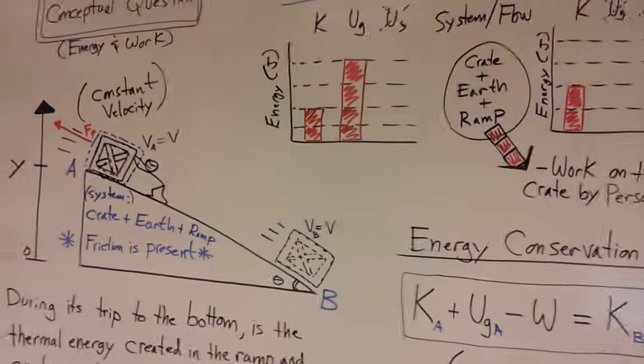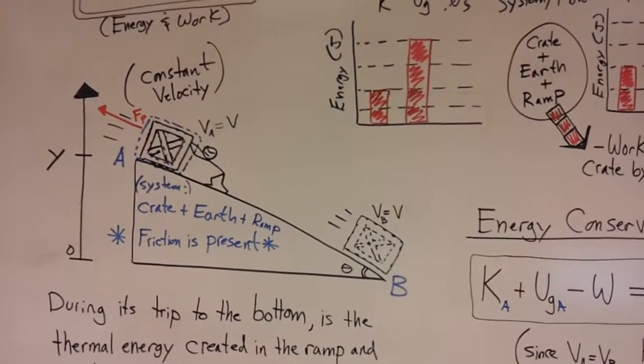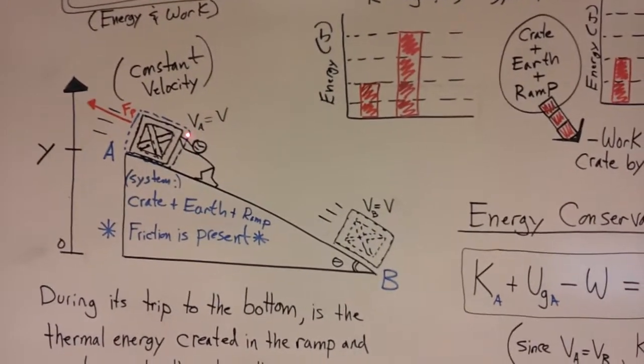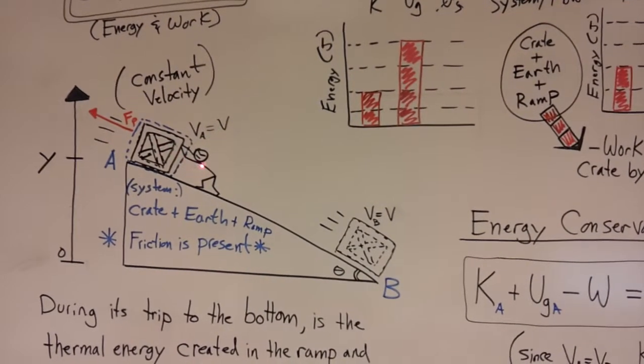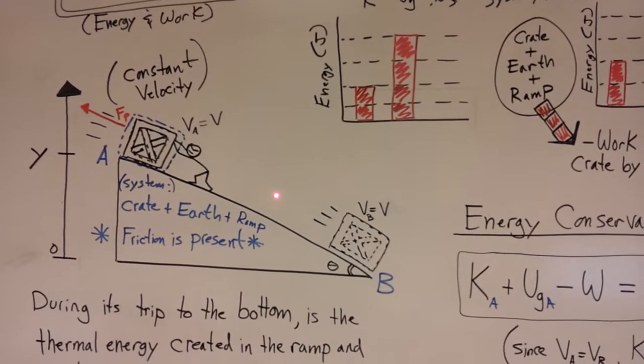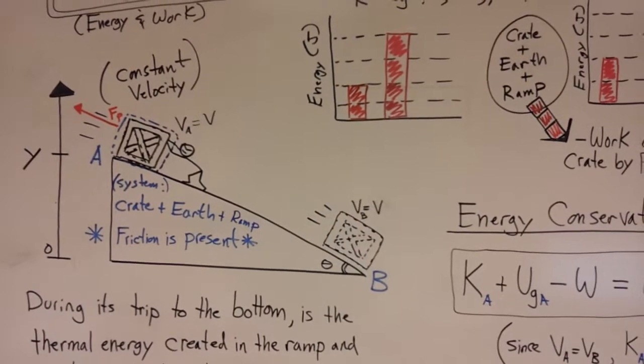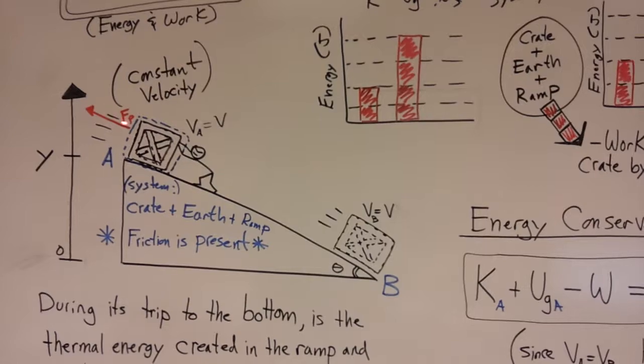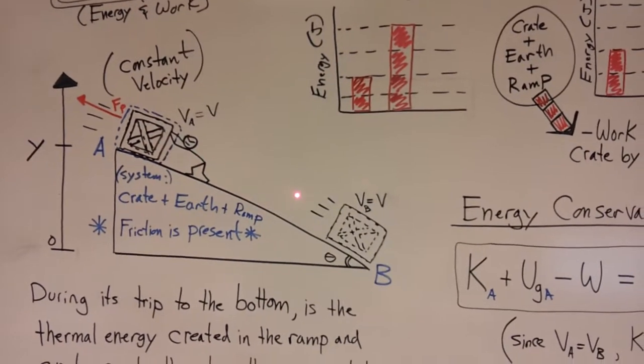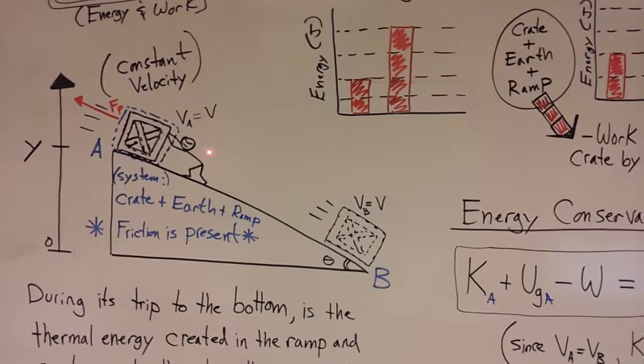Let's think about what it means that energy is transferred out of the system. There's a person pushing with a force in the opposite direction up the ramp as the crate's displacement, which is down the ramp. And if the crate is feeling an external force backwards as it's moving forwards, that means this person is transferring energy out of the system.